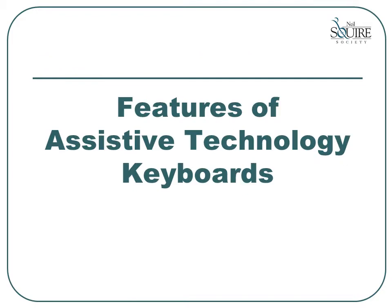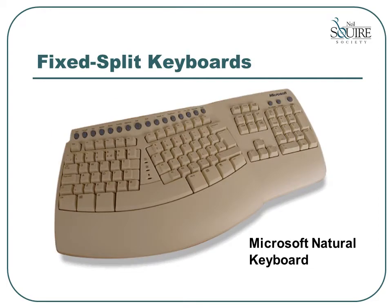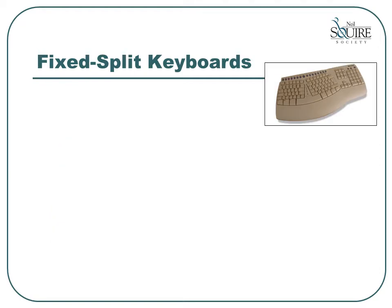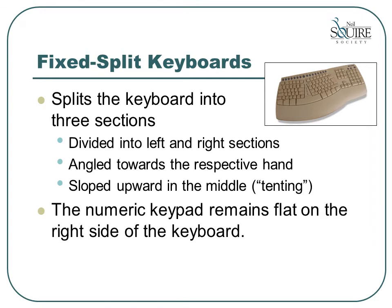Now let's cover some of the main features of these AT keyboard categories. Fixed split keyboards are the most common assistive technology keyboards on the market today. They are available at your local office retail stores such as Staples and Office Depot, and are commonly referred to as either ergonomic or wave keyboards. These keyboards are designed to improve the alignment of your wrist. A fixed split keyboard splits the keys into three sections. The main keyboard sections are angled towards your right and left hands and sloped upward in the middle. This sloping is called tenting. The numeric keyboard remains flat on the right side.